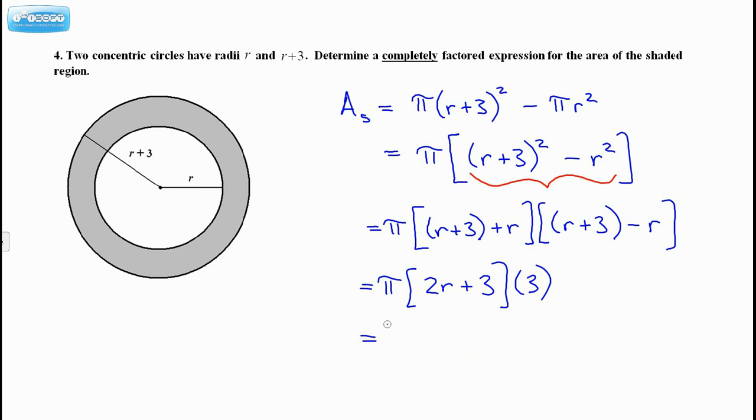So I'm going to put the 3 in front, so my final answer in factored form is 3 pi times 2R plus 3. So whatever R is, if you were to pick a number, this expression here would give you the area of this shaded region, and this is in factored form.